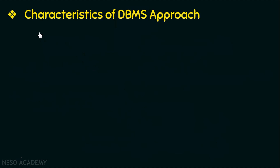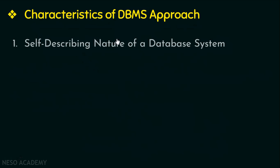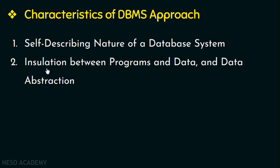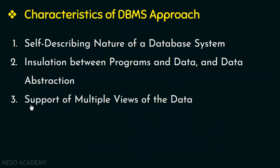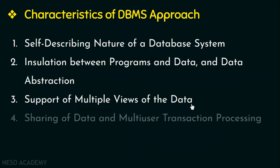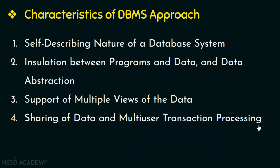Now we are going to discuss the main characteristics of the DBMS approach. The first one is the self-describing nature of a database system. The second characteristic is insulation between programs and data, and data abstraction. The third characteristic is support of multiple views of the data. And the last characteristic is sharing of data and multi-user transaction processing. Let us look into each of these in detail.